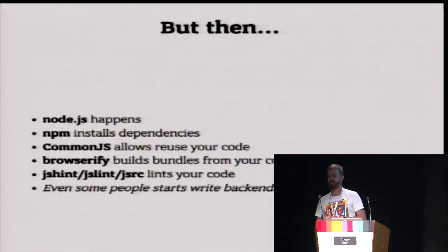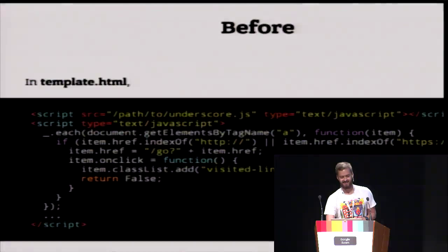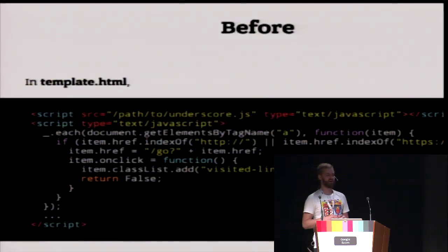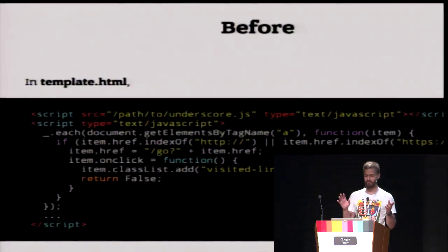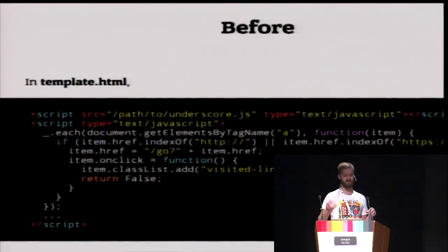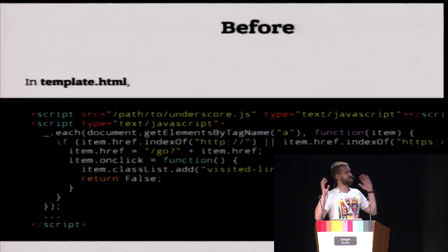Even some people decided that Node.js could be used for making backend applications. Here is a very simple example of how it was earlier: somewhere in an HTML template you needed to include all this code — import underscore, then use global underscore. That was a mess.